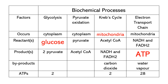Each process produces a substance: glycolysis forms two pyruvate, pyruvate oxidation forms acetyl-CoA, Krebs cycle forms NADH and FADH2, and electron transport chain produces ATP. There are also byproducts — during cellular respiration we exhale carbon dioxide and water vapor. Carbon dioxide is released in the Krebs cycle, and water vapor is released during the electron transport chain.